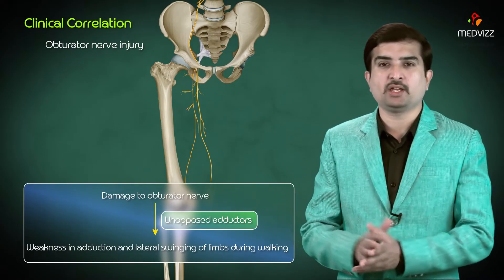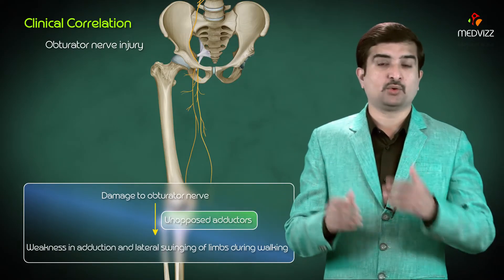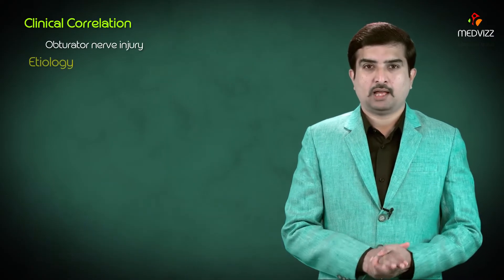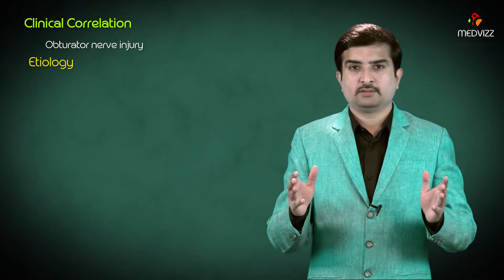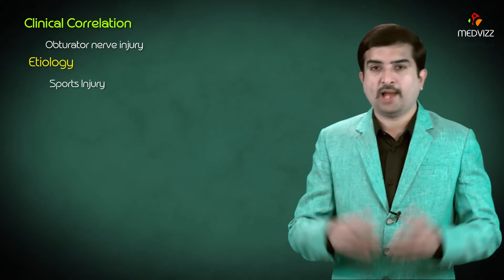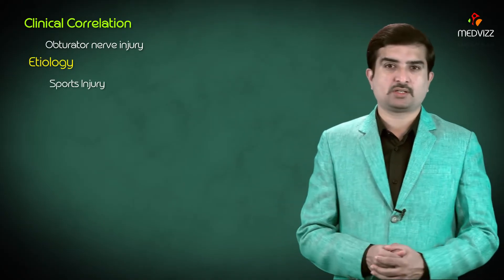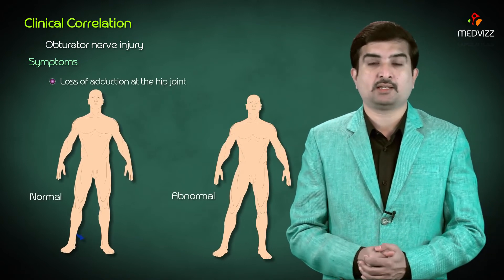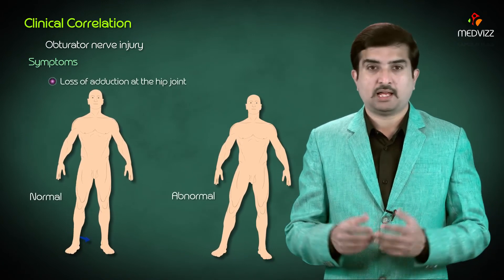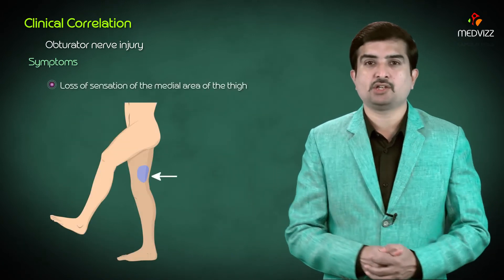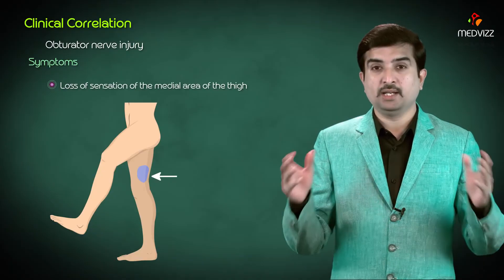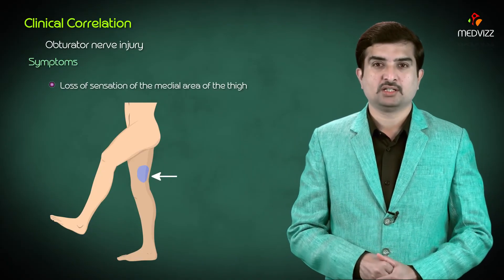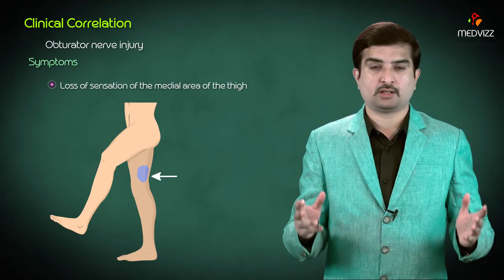The nerve can also be injured while playing sports. This results in loss of adduction at the hip joint as well as loss of sensation over the medial aspect of the thigh. This concludes the overview of the obturator nerve.